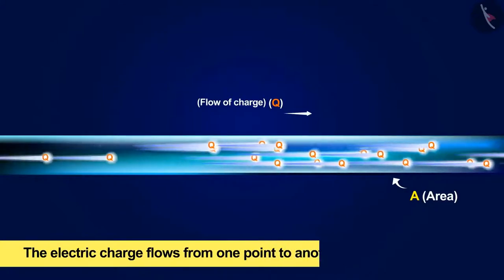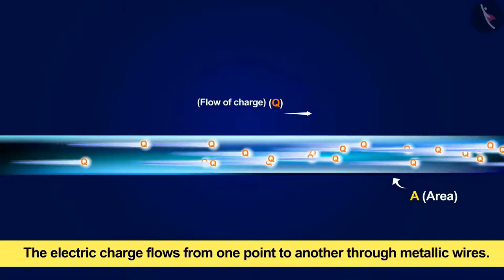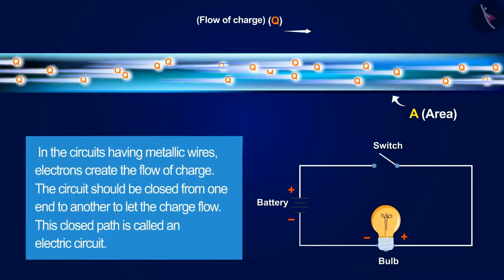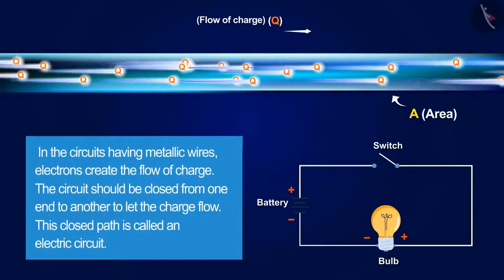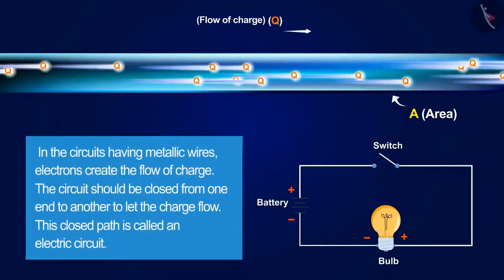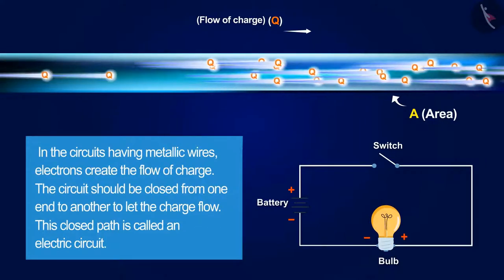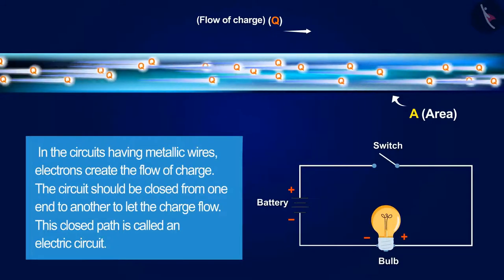The electric charge flows from one point to another through metallic wires. In circuits having metallic wires, electrons create the flow of charge. The circuit should be closed from one end to another to let the charge flow. This closed path is called an electric circuit.